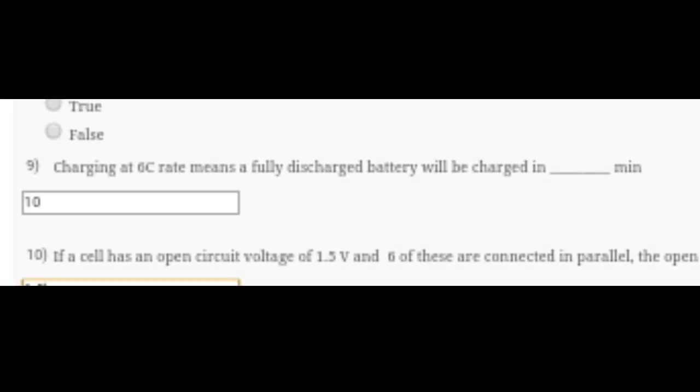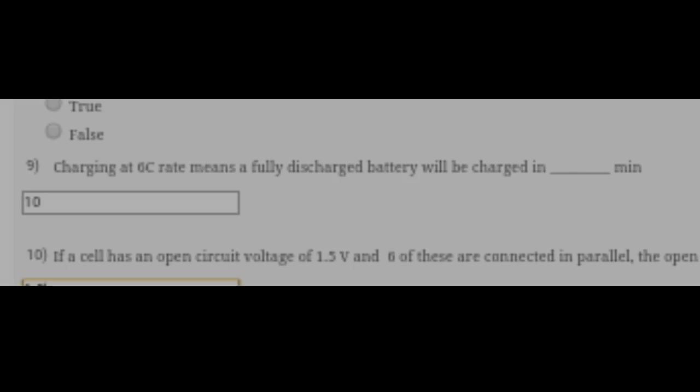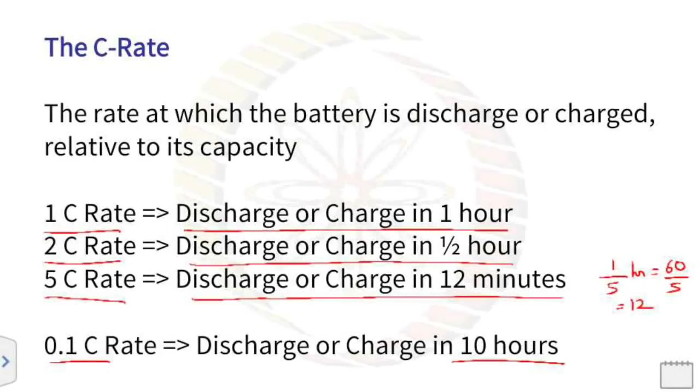Question 9: Charging at 6C rate means a fully discharged battery will be charged in how many minutes? The answer is 10 minutes. You can verify from this picture - we can see that 1C rate equals discharge in 1 hour, 2C rate is 1/2 hour, and 5C rate is 1/5 hour which equals 12 minutes. Similarly, 6C rate equals 1/6 hour, and 1/6 hour is 10 minutes.